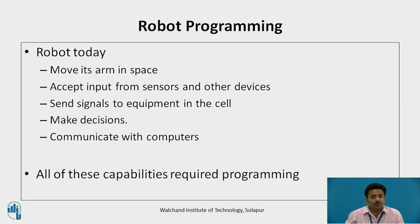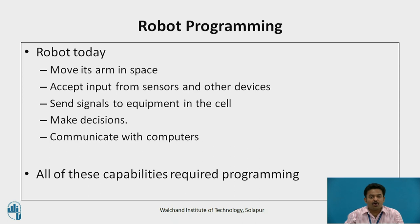Robots today can do much more than merely move their arm through a series of points in space. Current technology allows robots to accept input from sensors and other devices. They can send signals to pieces of equipment operating with them in the cell. They can make decisions and communicate with computers to receive instructions and to report production data and problems. All of these capabilities require programming.